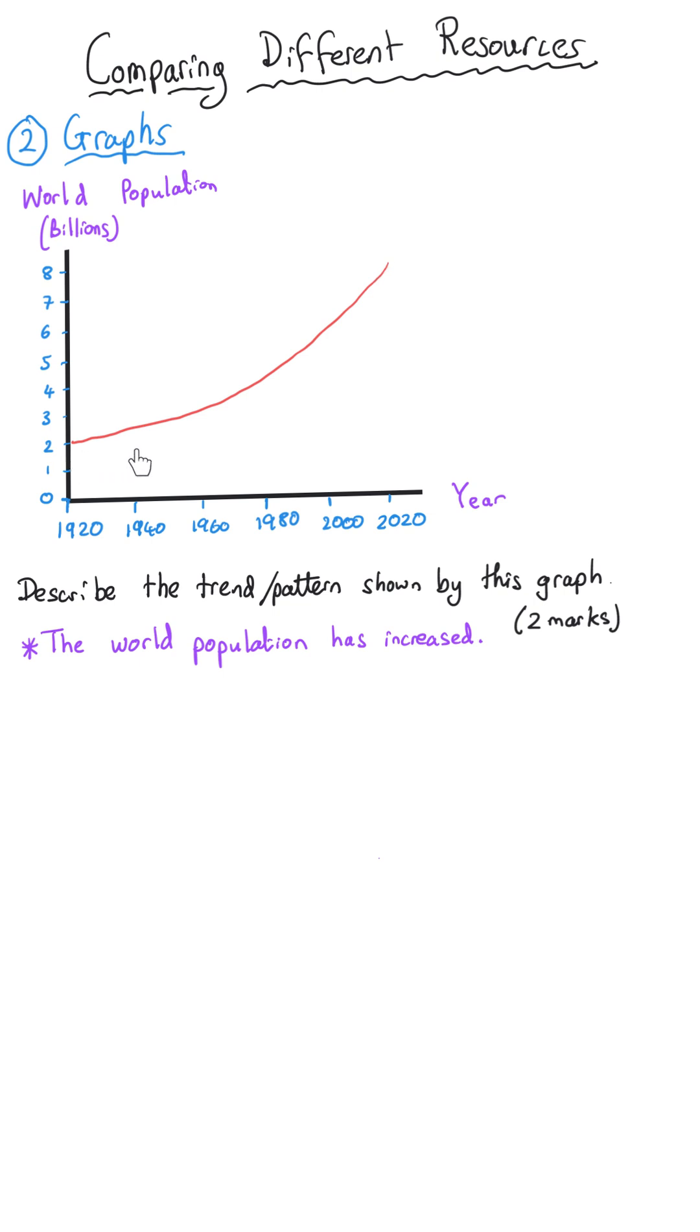And if you take a look at the first 40 years or so it changes far less from two billion to three billion population than it does in the second half from three up to eight. It's much steeper after about 1960.